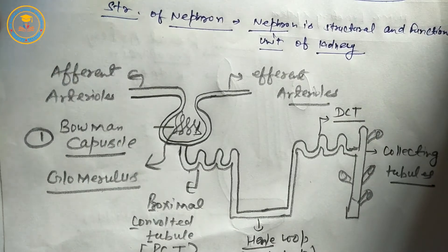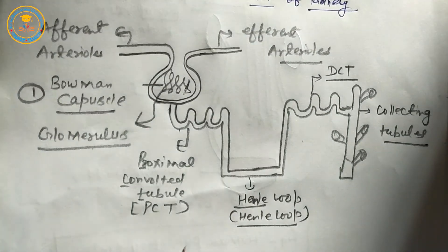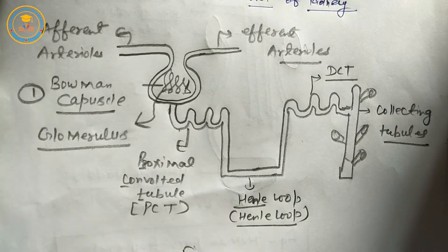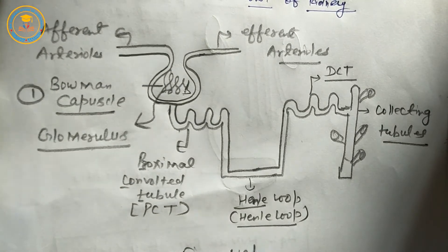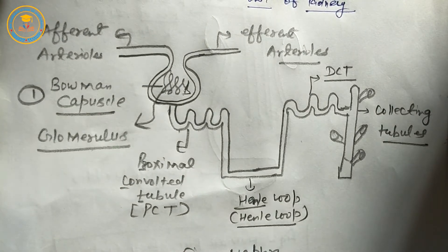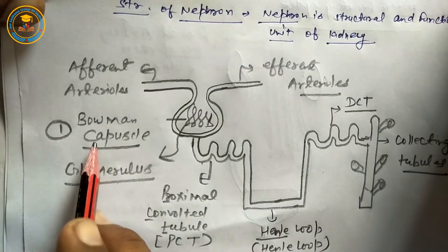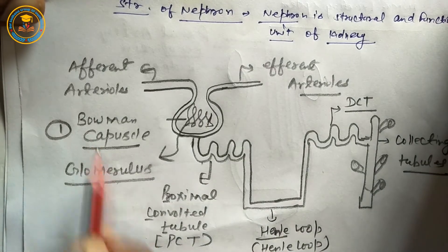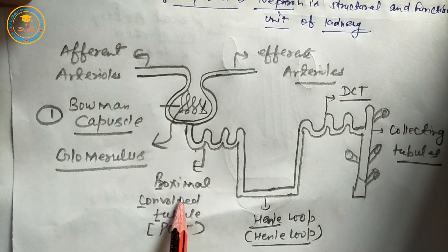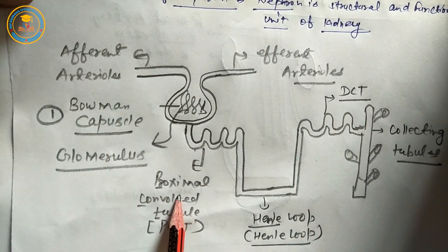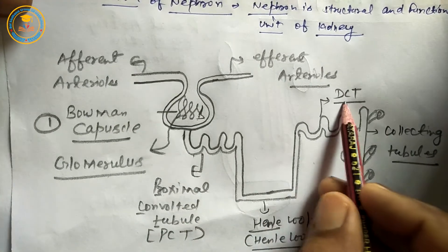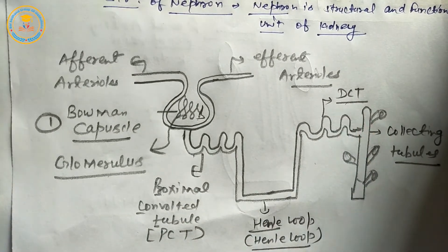These are the parts of the nephron. The figure of nephron: first part is Bowman's capsule. Second is renal tubule. The renal tubule includes: first, PCT (proximal convoluted tubule); second, Henle's loop; third, DCT (distal convoluted tubule); fourth, collecting tubule.